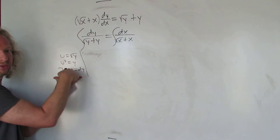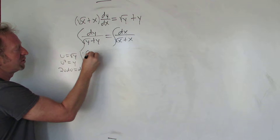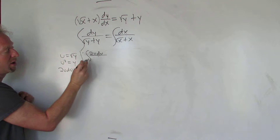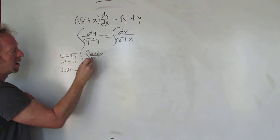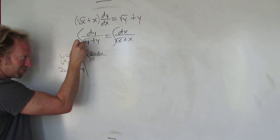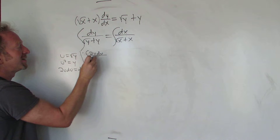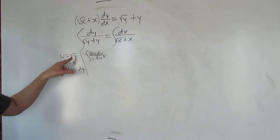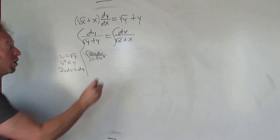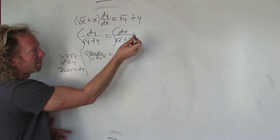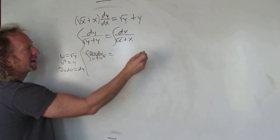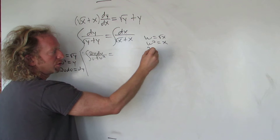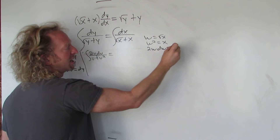So dy is 2u du. On the bottom we have: the square root of y is u, and y is u squared. So the denominator becomes u plus u squared. For the x side, we'll let w equal the square root of x, so w squared equals x, and therefore 2w dw equals dx.